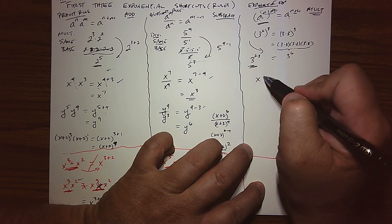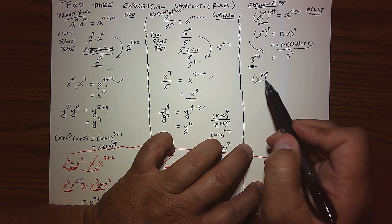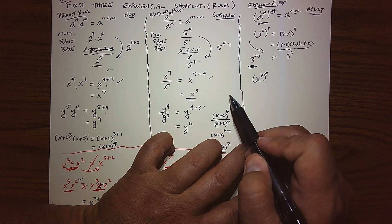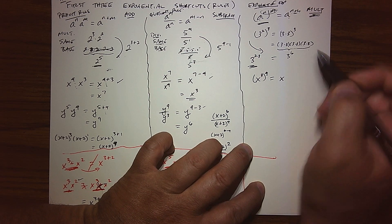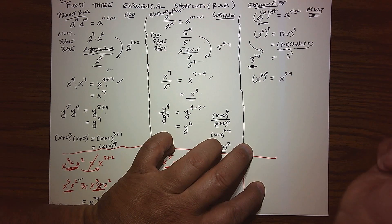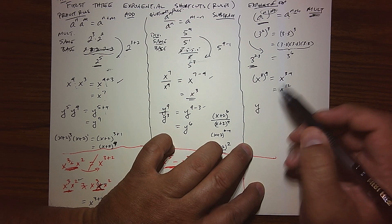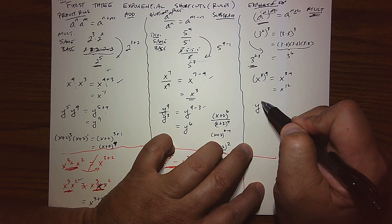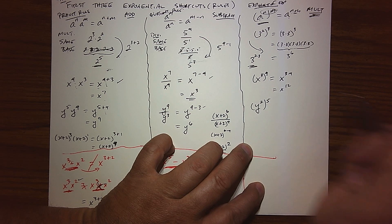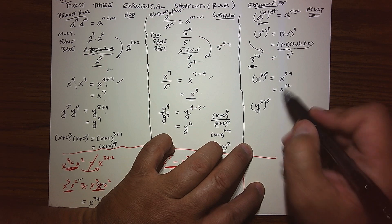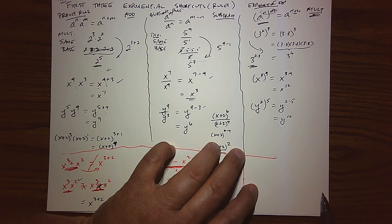If I had x to the third raised to the fourth power, I have an exponent of an exponent — a power of a power — so classic exponential rule. Keep that base and multiply the exponents, giving x to the twelfth. If I had y to the second power raised to the fifth power, again I have a power of a power. Keep the base and multiply the exponents, giving y to the tenth.